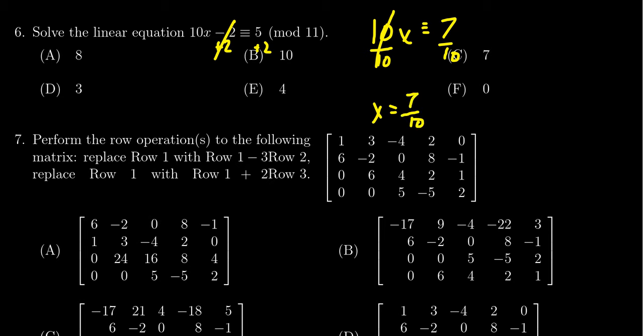Now I have to reduce this number mod 11. I want to replace the numerator with something congruent to 7 mod 11 that's actually divisible by 10. We can start adding or subtracting multiples of 11.